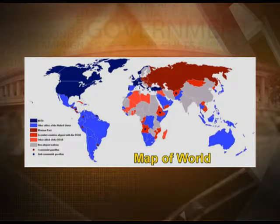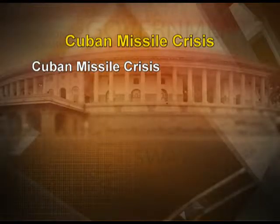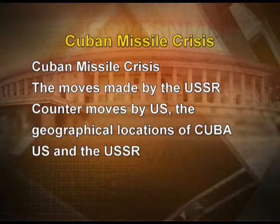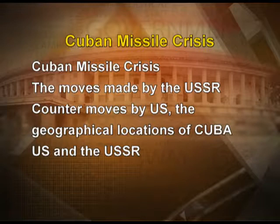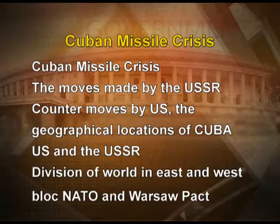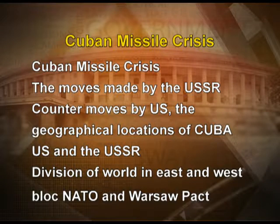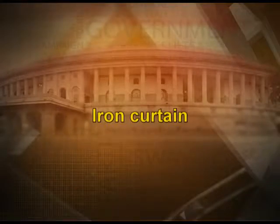We will discuss about non-alignment in the course of this chapter. To conclude, in this episode we discussed the Cuban Missile Crisis — the set of events that led to its development during the Cold War era, the moves made by the USSR and the counter moves made by the US, and the geographical location of Cuba vis-à-vis the US and the USSR. We also discussed the division of the world into East and West blocks — the Warsaw Pact countries and NATO members respectively. In the next part of this chapter, we will discuss the Iron Curtain and the two power blocks and their influence on world politics.